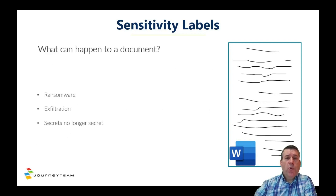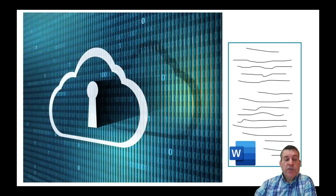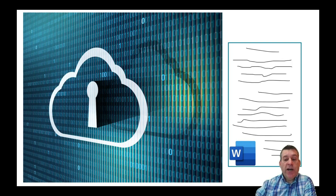So what would cause you to want to use a sensitivity label? Let's talk about three examples. The first is ransomware. A sensitivity label will not stop a document from being encrypted by ransomware, but what it will do is allow you to identify documents that contain important or sensitive information and put those in more secure locations. If you have a document in a place where only two or three people can see it and somebody else gets ransomware on their computer, that ransomware won't be able to see your document and thus won't be able to encrypt it. That's a win.